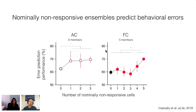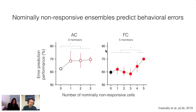While nominally non-responsive cells are as informative as responsive neurons, they differ in an important way. Historically, predicting behavioral errors using single-trial activity has been challenging. But we found that nominally non-responsive neurons were error-predictive — we could predict from the neuron's firing patterns that the animal was about to make a mistake. Furthermore, error prediction improves with the number of nominally non-responsive cells in an ensemble, suggesting these cells might play a unique role in sensory-motor transformations.